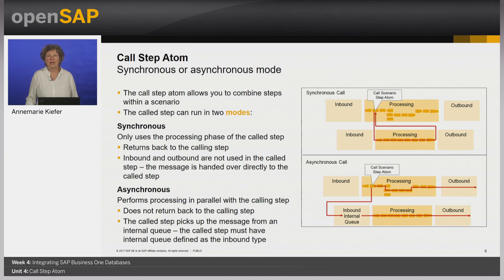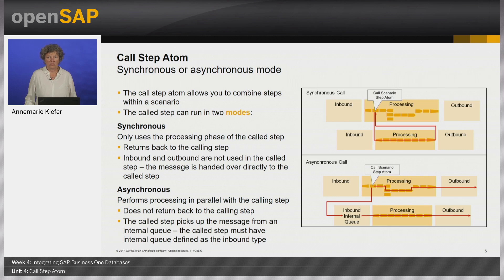The call step atom allows you to combine steps within a scenario package. This gives you the ability to divide a large process into smaller steps and optionally run parallel steps. When you use the call step atom, you can select a mode for running the call step. In synchronous mode, as you can see in the diagram, only the processing phase of the call step is used and processing returns to the call atom. The inbound and outbound phases of the call step are not used. The message is handed over directly to the call step. The calling step waits for the call step to complete — this is an include of a step into another step.